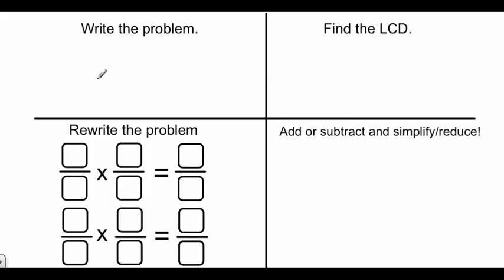For the first problem, we're going to set it up. That problem is 5/8 plus 3/4. Your first step is always to write the problem. What we have here is a T-chart with four different squares. As you're adding and subtracting fractions in your notebook, it's important that you set it up like this. By setting it up carefully and organized, you're going to make sure you're getting the problem correct. After we've written the problem, we move to this box to find the least common denominator.